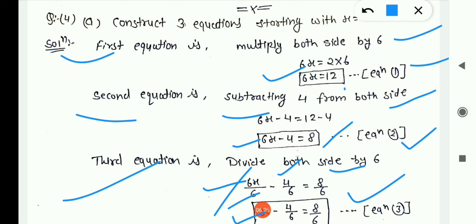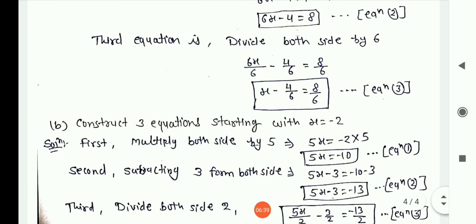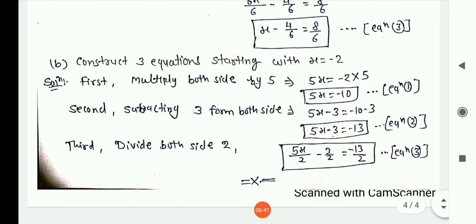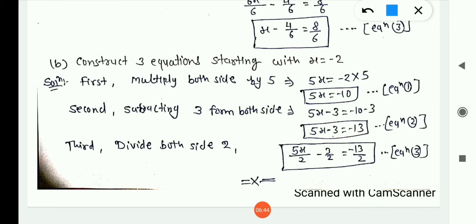So you can suppose any number and apply multiplication, subtraction, or division to construct 3 equations starting with x = 2. Similarly, for Question (b), construct 3 equations starting with x = −2. You do this yourself. Thank you.